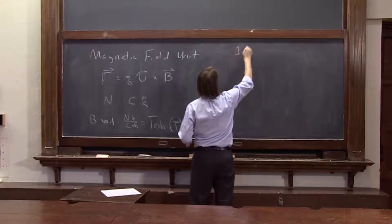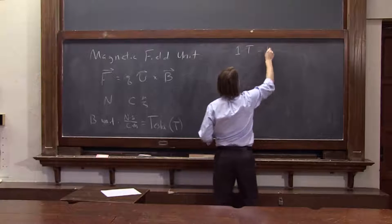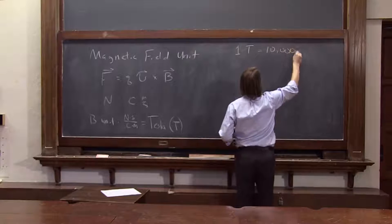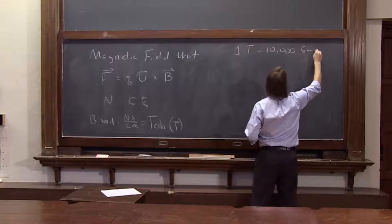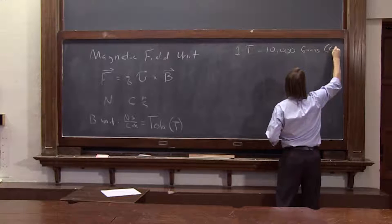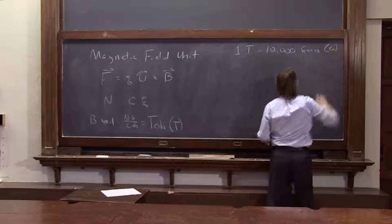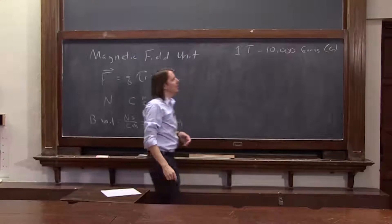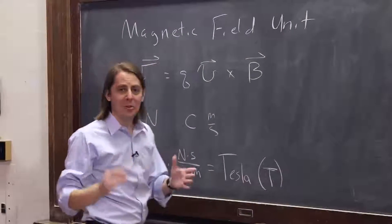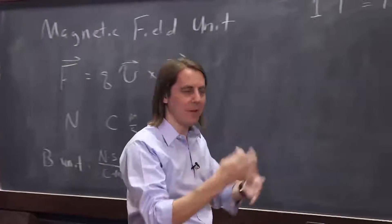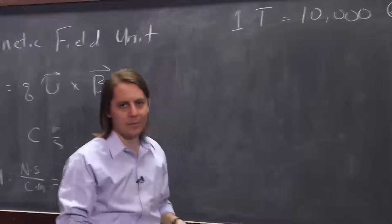So we can say that one Tesla equals 10,000 Gauss, which we abbreviate with a G. So Gauss is another unit of the magnetic field, and it's not 1,000. Usually we have these things always changing by factors of 1,000. This one happens to be 10,000.